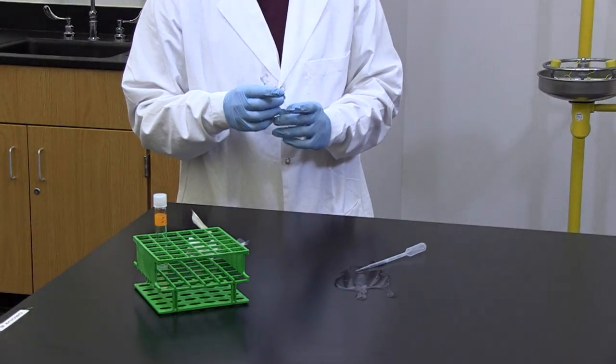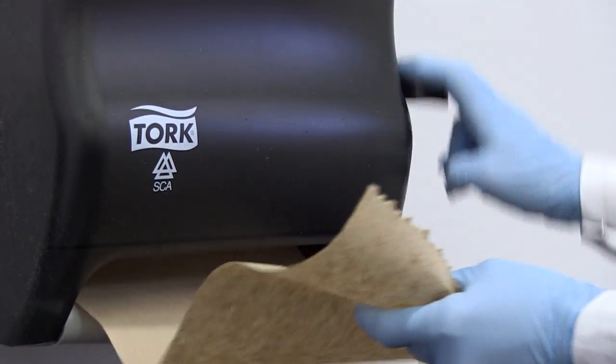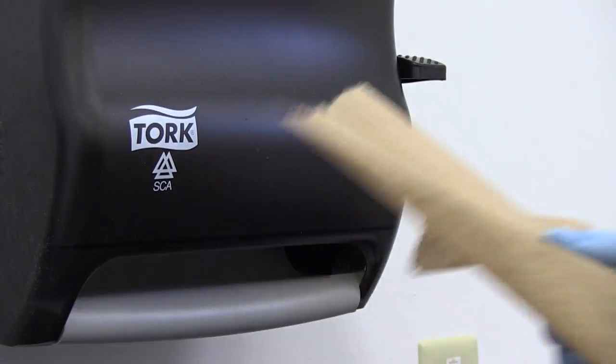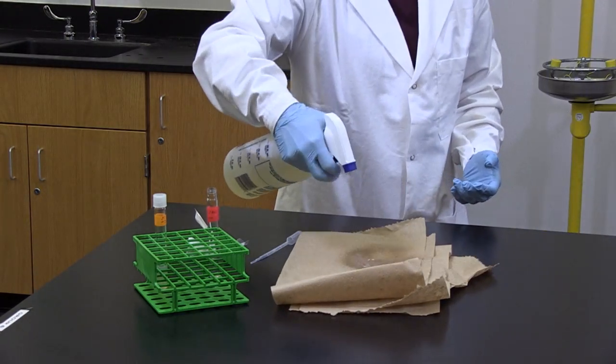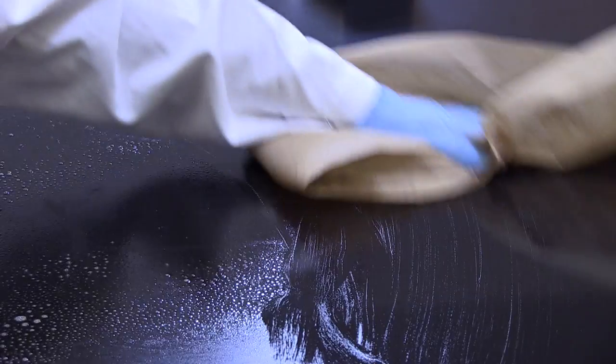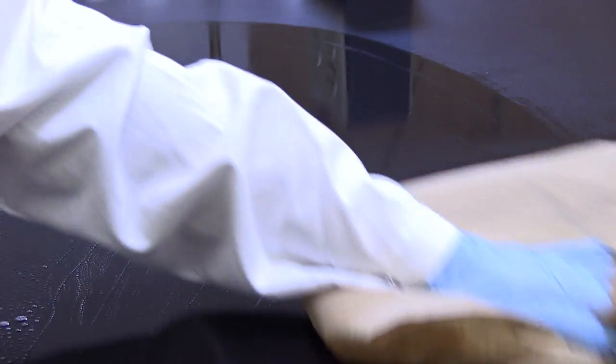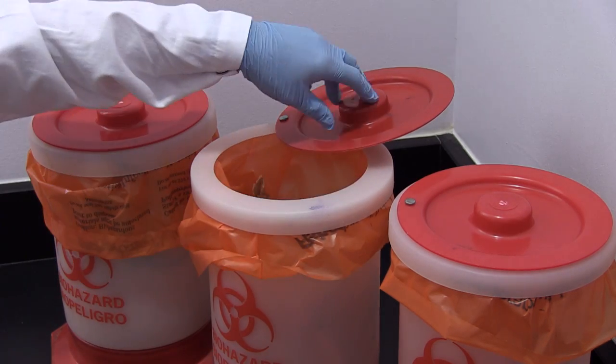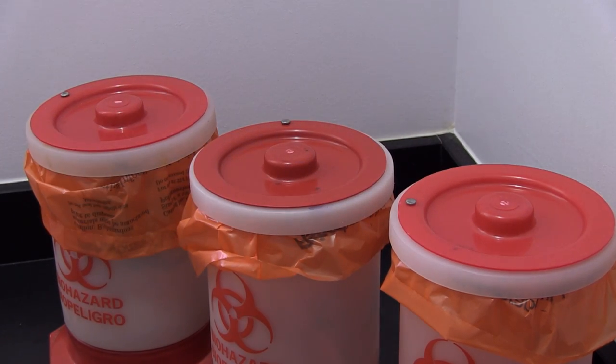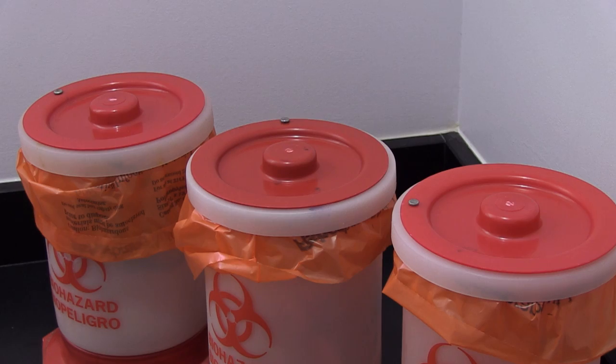Broken glass and bacterial cultures are a hazardous combination. With your instructor's approval, cover the spill with paper towels and saturate the towels with disinfectant. After 15 to 20 minutes, carefully wipe up the spill and discard the paper towels in the biohazard container for autoclaving. Discard the broken glass in the sharps container.